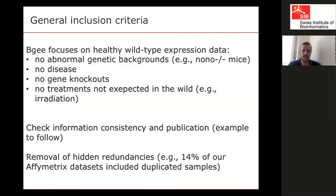We focus only on healthy wild types — no abnormal genetic background, no disease, no gene knockouts, no treatments not expected in the wild. That can be hard to define sometimes. For example, with fasting experiments in mice, at which point does fasting become abnormal? Individuals in the wild experience fasting from time to time — is 12 hours acceptable? Is one week? We have to draw lines at some point.